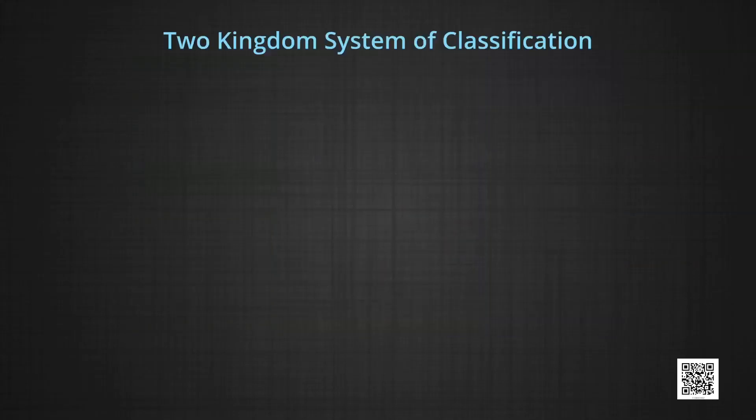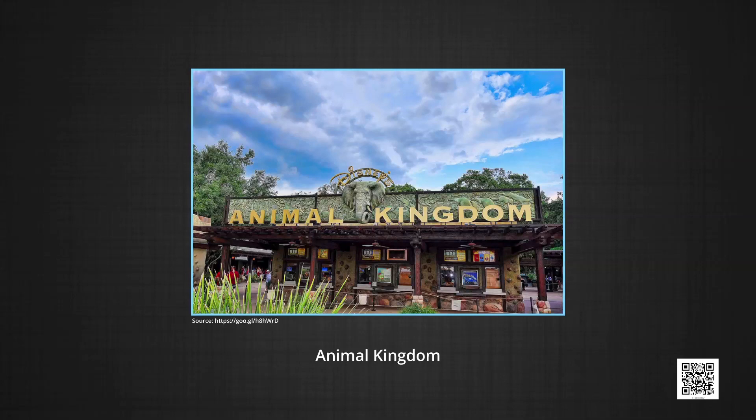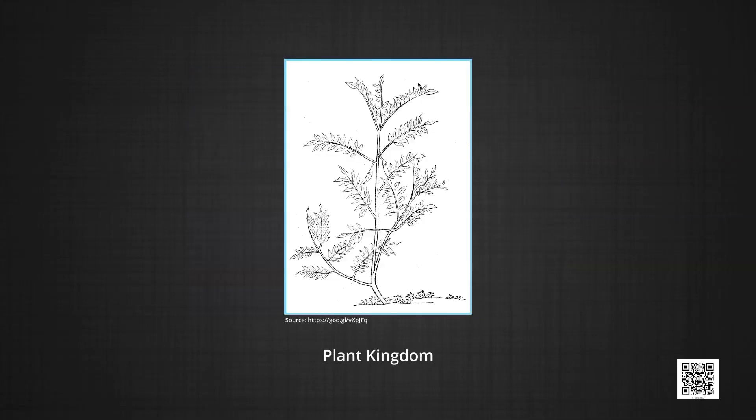Two kingdom system of classification is the oldest system of classification, which was given by Carolus Linnaeus in 1758. According to him, the living world was divided into two major categories of kingdoms: Animal kingdom, which includes all the animals, and Plant kingdom, which includes all the plants.